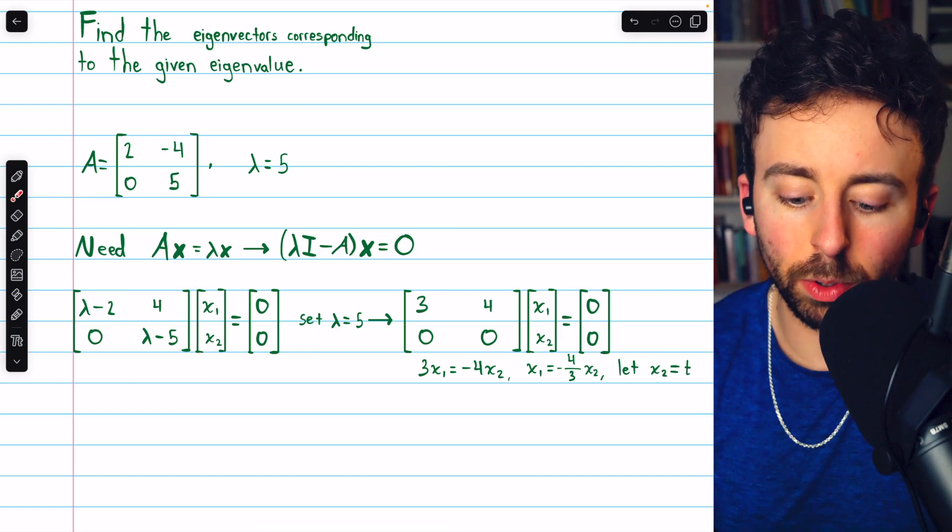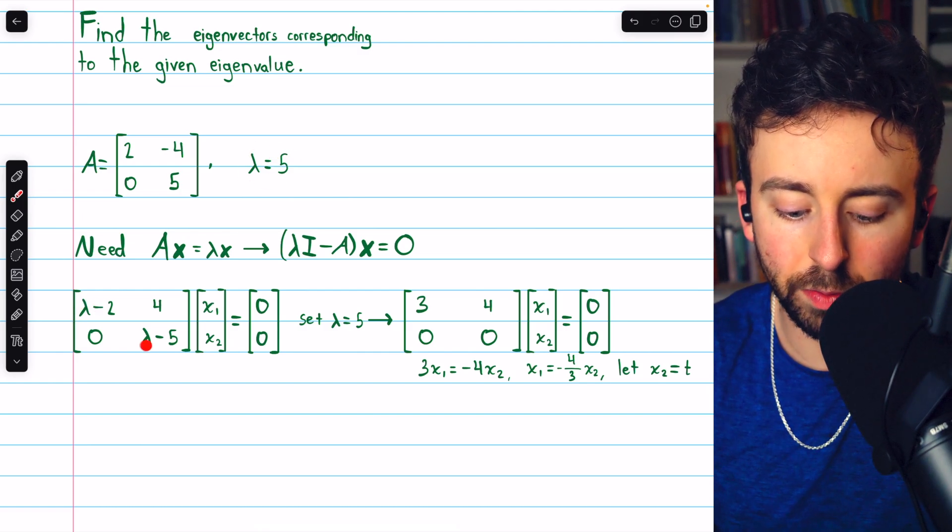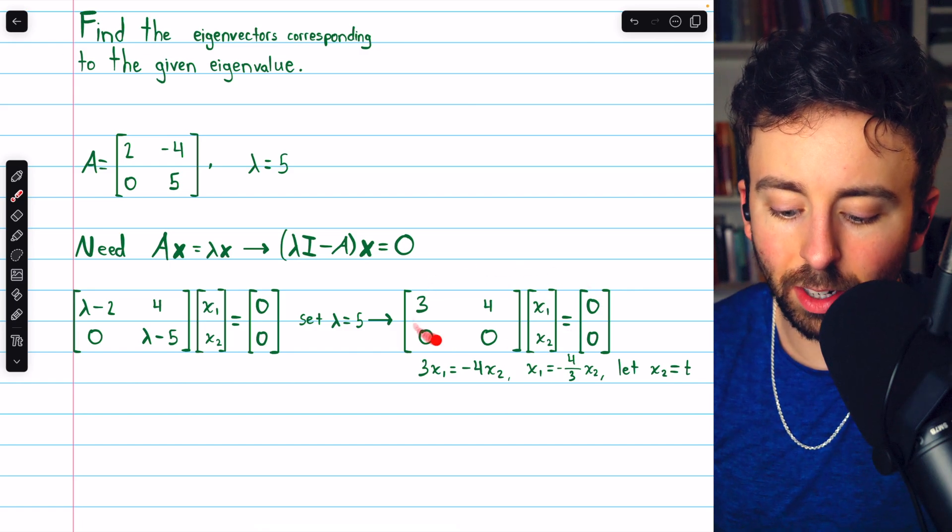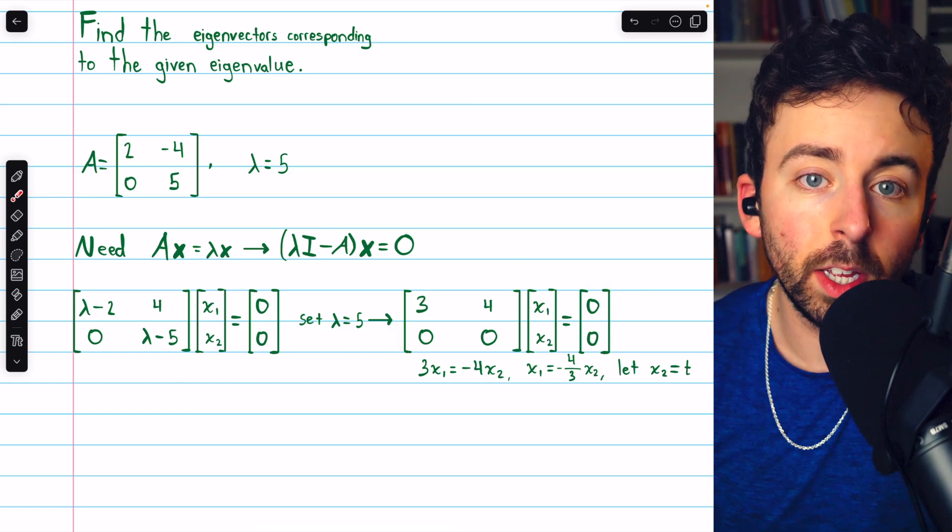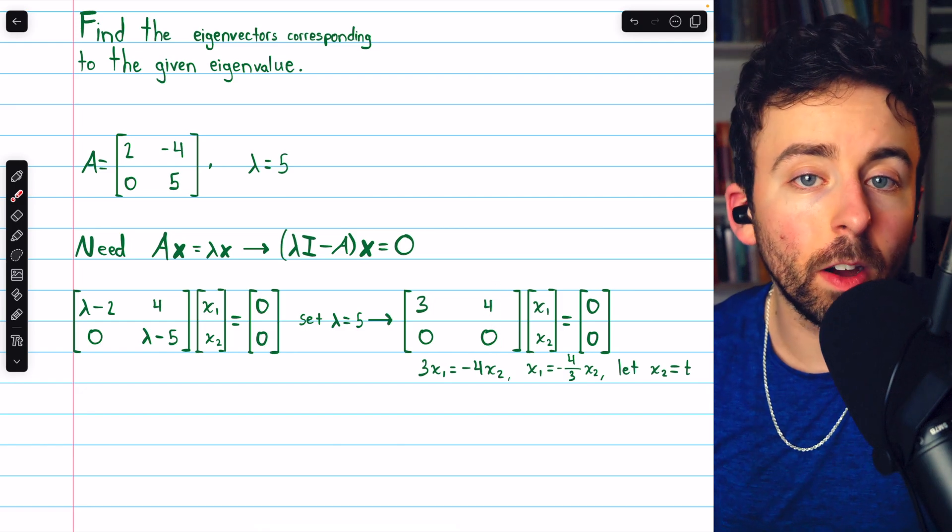We can then set lambda equal to five. That's the given eigenvalue. So five minus two is three, five minus five is zero. And we end up with this system, which is very easy to solve.